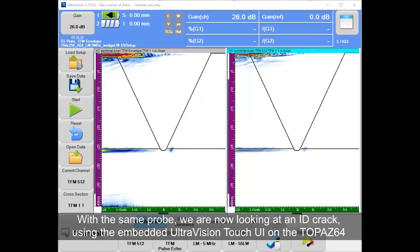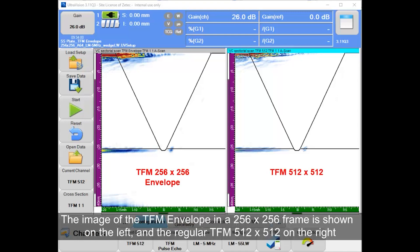With the same probe and wedge, we're now looking at an ID crack using the embedded UltraVision Touch user interface on the Topaz64. The image of the TFM envelope in a 256 by 256 frame is shown on the left and the regular TFM 512 by 512 on the right.